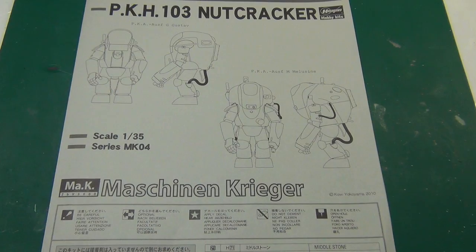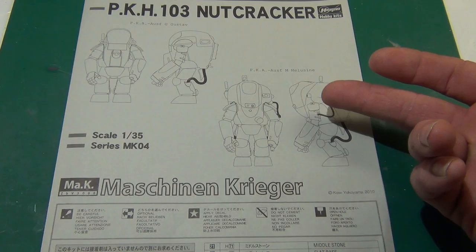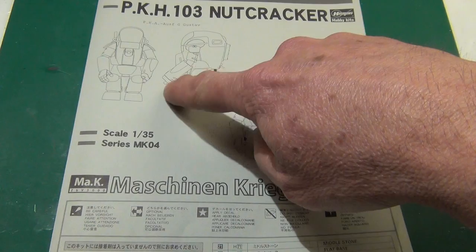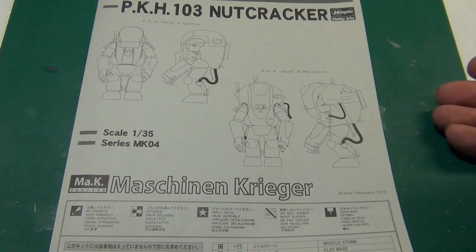It comes with two figures, the Gustav and the Mezluzin, I believe it's pronounced. And you have different configurations. Now, for example, here they're showing the laser cannon on this guy. But on the box you can see where he's holding a weapon. So there's different configurations that you can build these guys in.